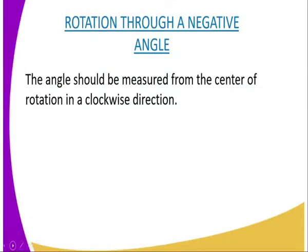On to the lesson objectives: by the end of this lesson you should be able to, number one, highlight the procedure followed when determining the center of rotation and the angle of rotation, and number two, determine the center and also the angle of rotation. On rotation through a negative angle, the angle should be measured in a clockwise direction.